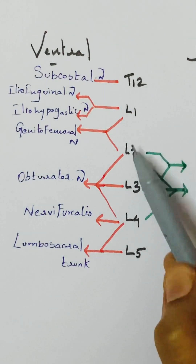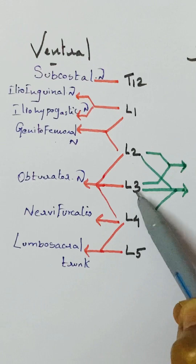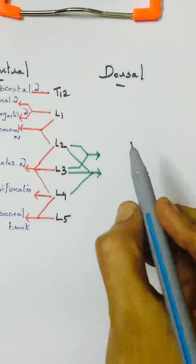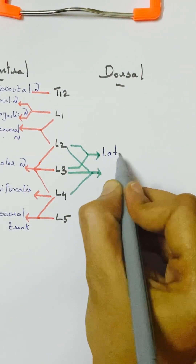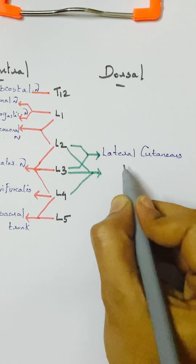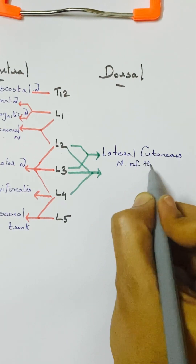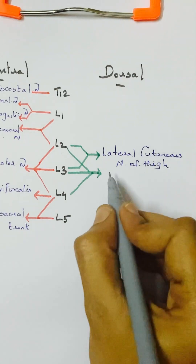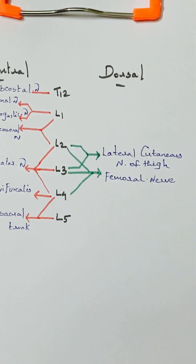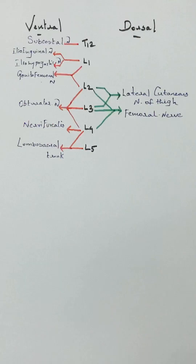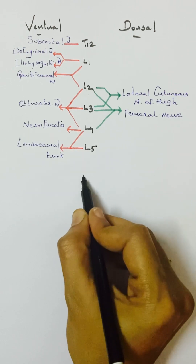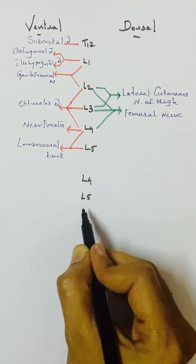On the dorsal side, while the ventral rami of L1 and L2 form the genitofemoral nerve, the dorsal rami of L2 and L3 form the lateral cutaneous nerve of the thigh. Because of 90-degree inward rotation of the lower limb, all the dorsal rami supply the anterior compartment of the thigh. From the dorsal rami of L2, L3, L4 we have the femoral nerve, which is the nerve of the front of the thigh.